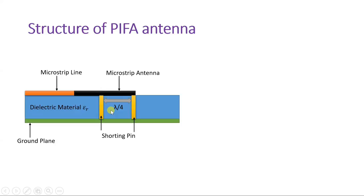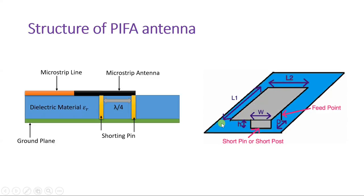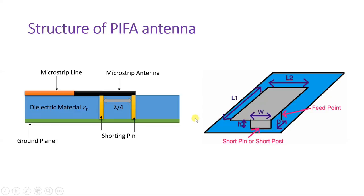Initially the size of the microstrip antenna was lambda by 2. After having shortening of pin, you can see this is now lambda by 4. Two things are happening: one is reduction in impedance of the device, and second is reduction in size. Viewing from another angle, you can see the two pins, and from that side it appears like an F shape — and based on that F shape, the name is Planar Inverted F Antenna.